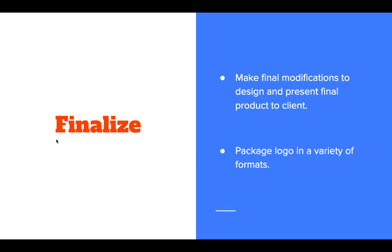The last step is to finalize your logo. Once you've made final modifications, you present the design to the client as a finished product. Modifications can happen in the sketch stage or after you've turned it into vector art — digital artwork. The client may request further changes or be happy with what you've delivered. Once complete, you'll want to package the logo in a variety of file formats.